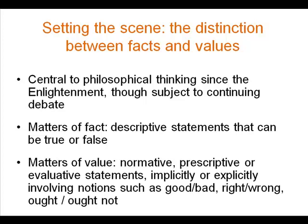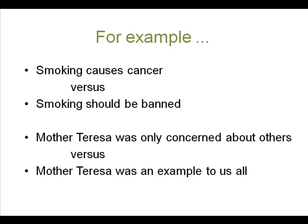It's a central idea in moral philosophy and epistemology that there's a distinction between facts and values. This distinction goes back to the Enlightenment and is much debated today in philosophical circles. Not everyone agrees that there is a hard and fast separation between them. But for our purposes, it is useful to separate the two. On the one hand, we have matters of fact — descriptive statements that can be true or false. On the other, matters of value: statements that are normative, prescriptive, or evaluative, involving notions such as good or bad, right or wrong, ought or ought not — or the common survey wording, should or should not.